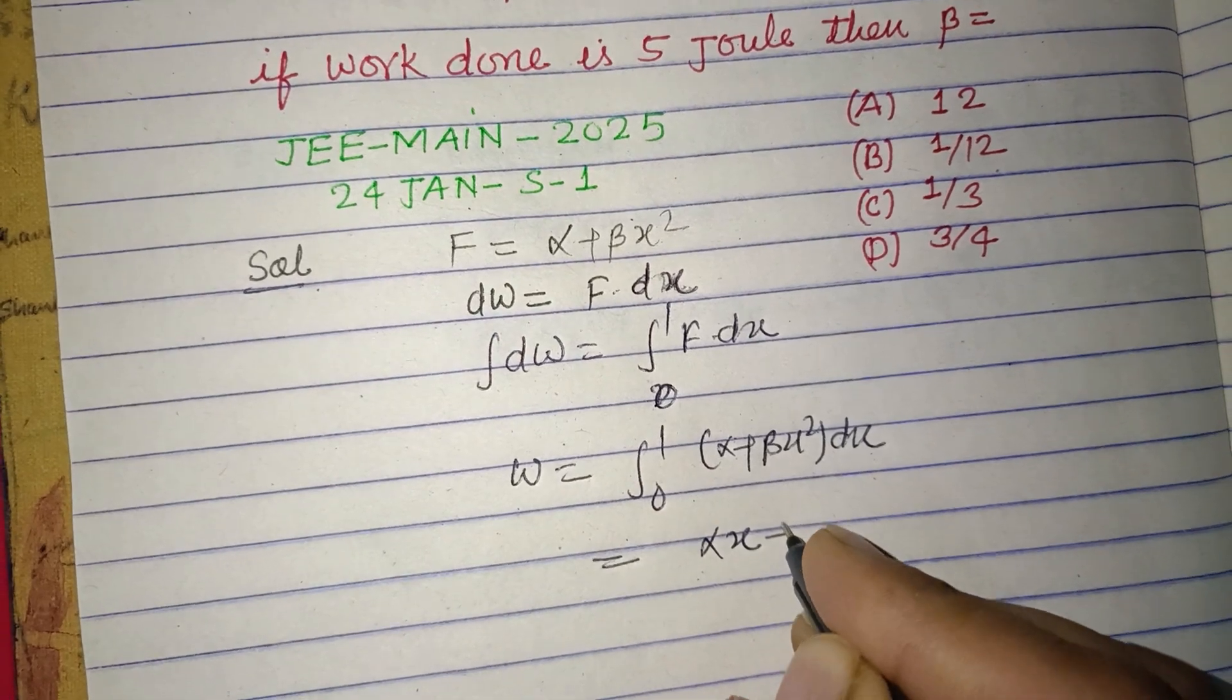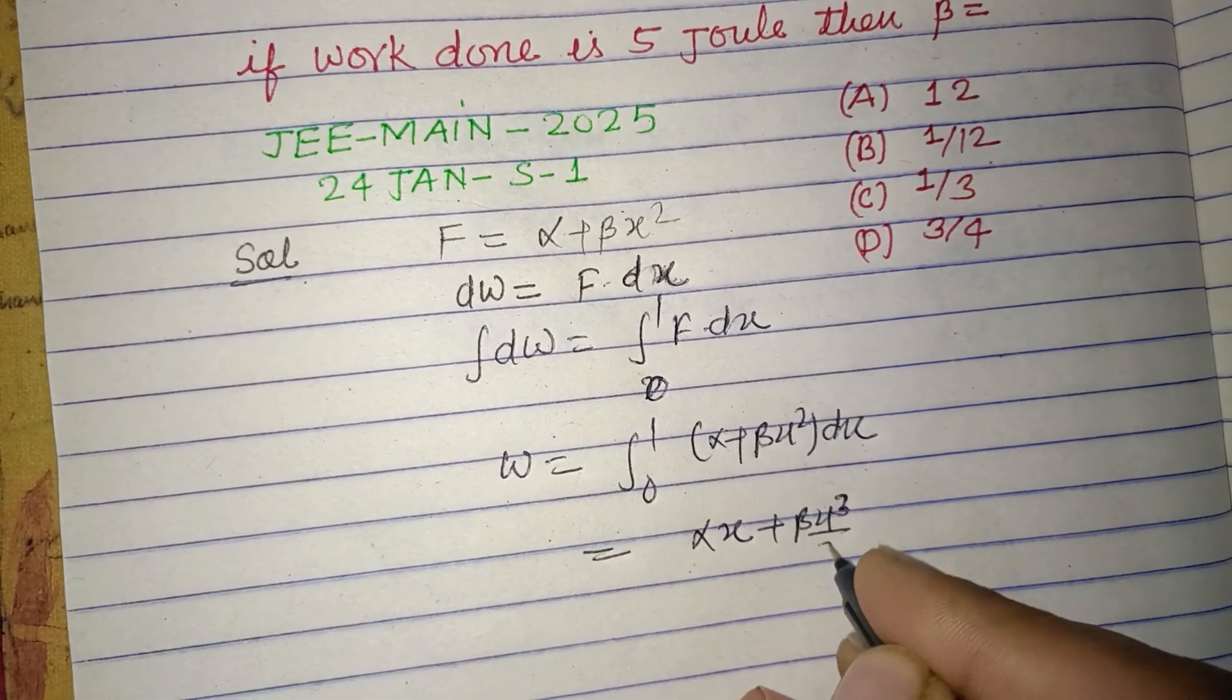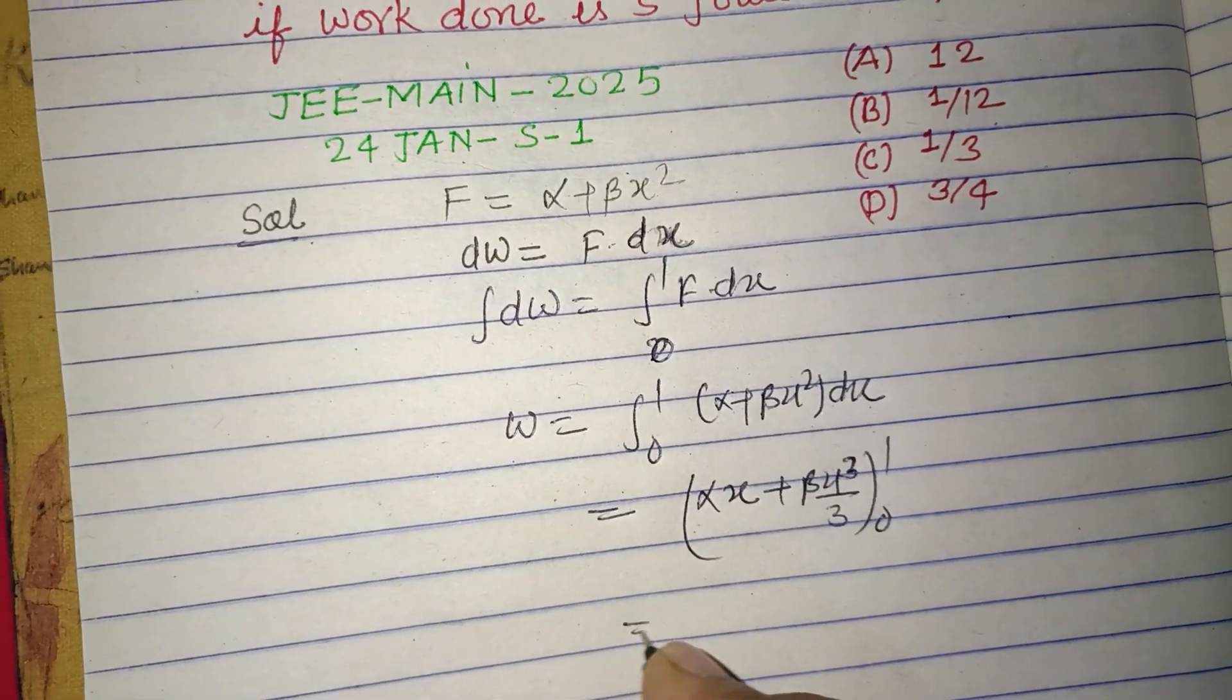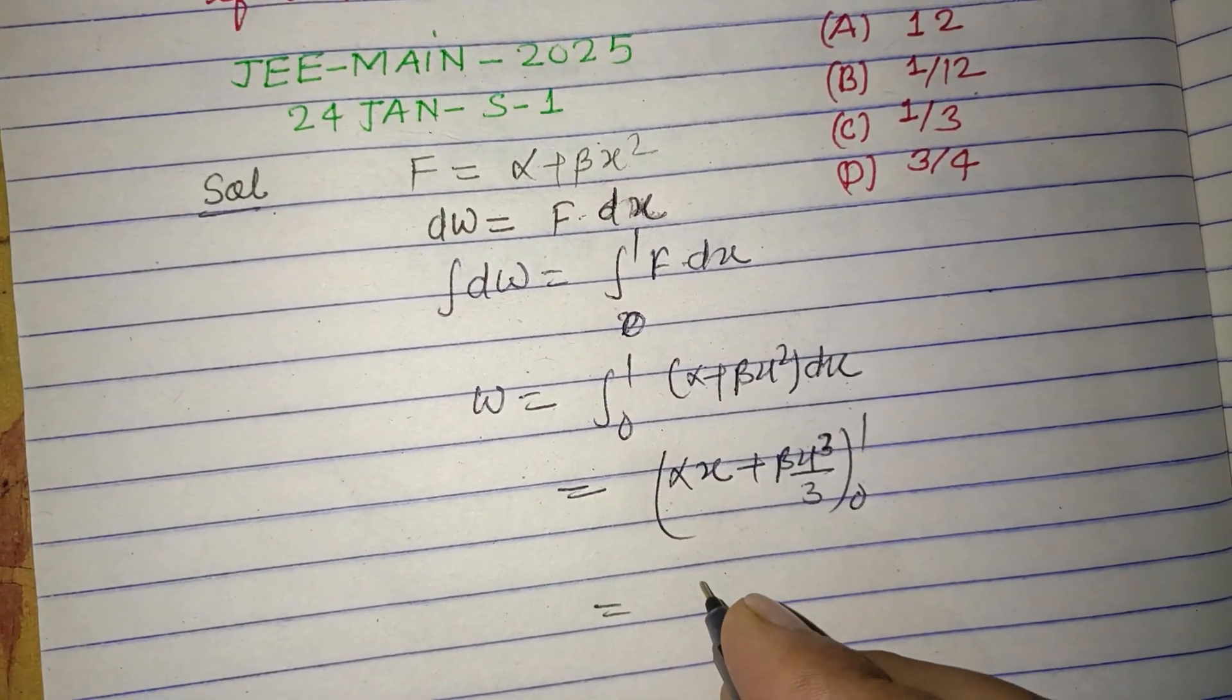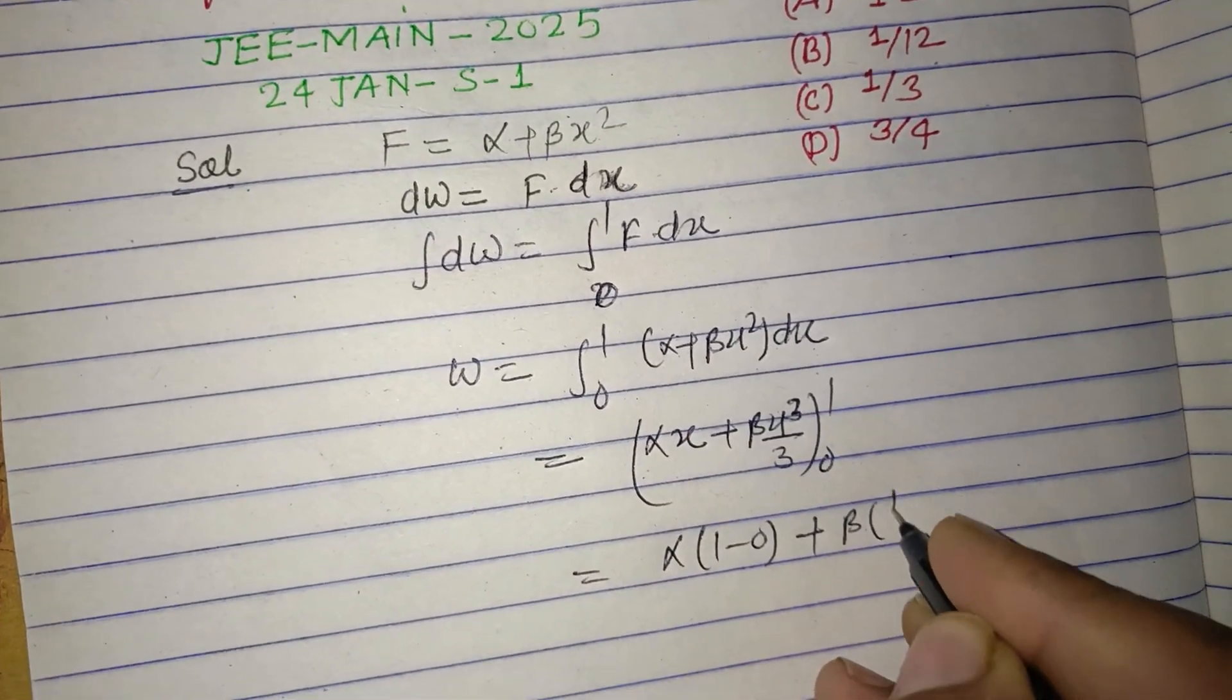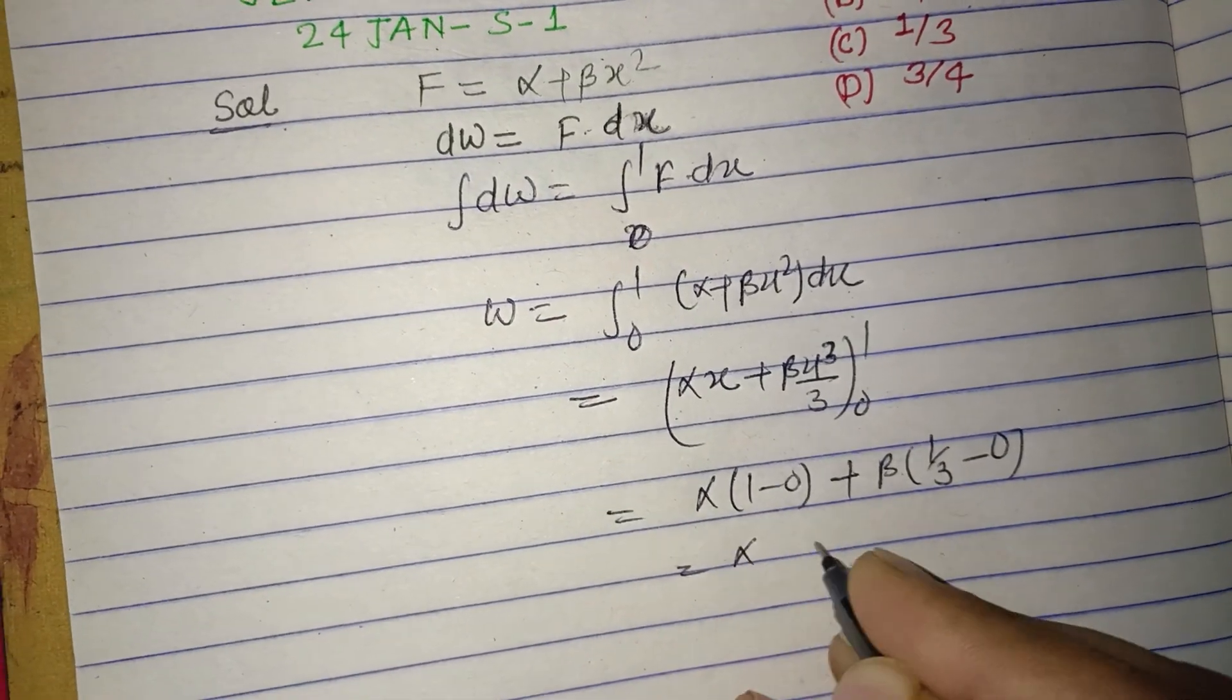The limit is 0 to 1. So putting these values: α(1 - 0) + β(1/3 - 0). So this is α + β/3.